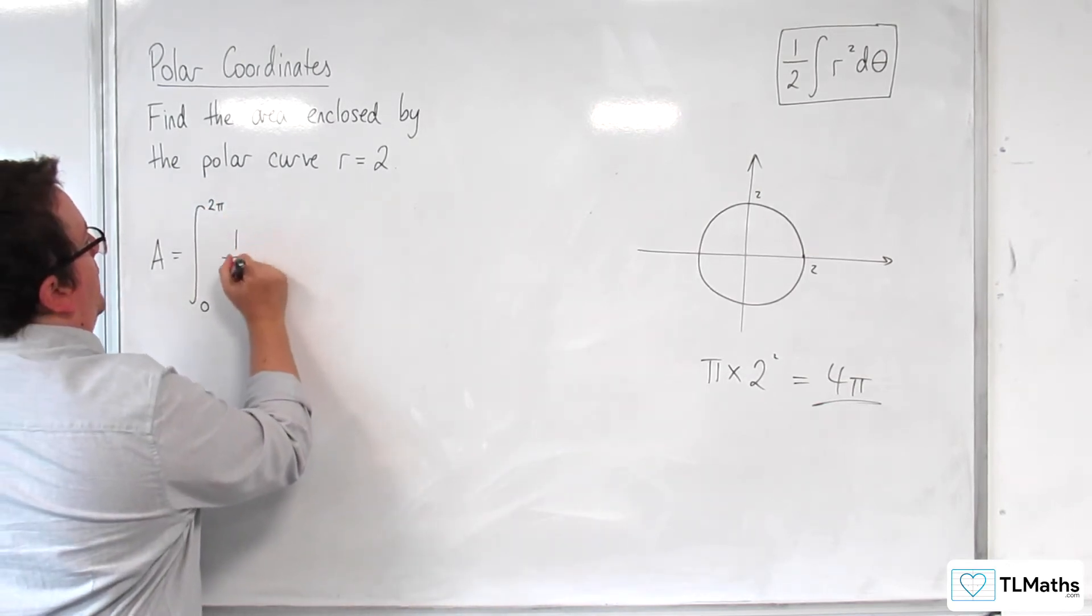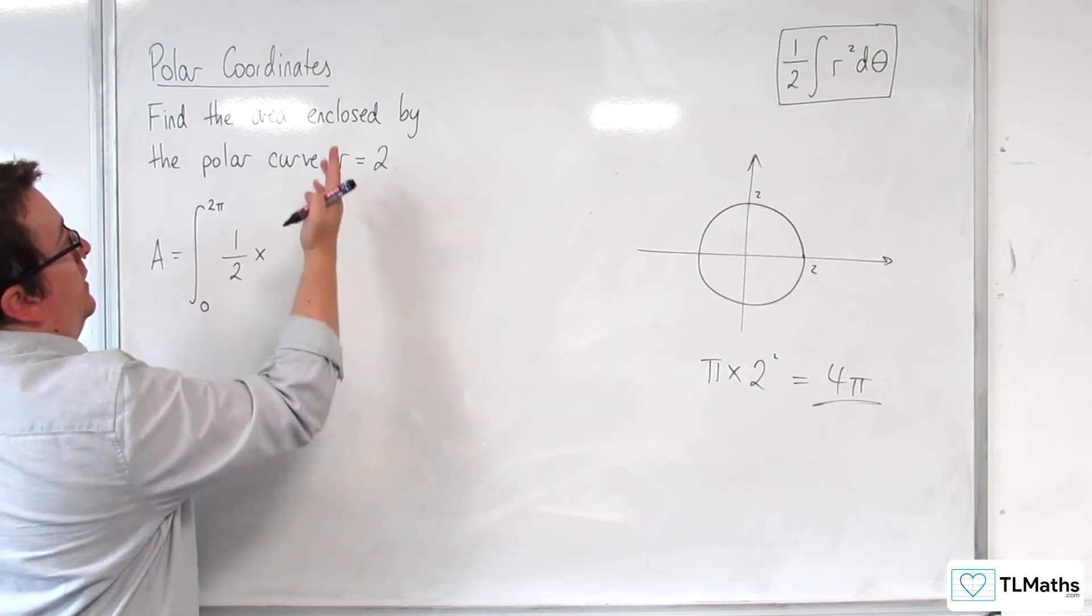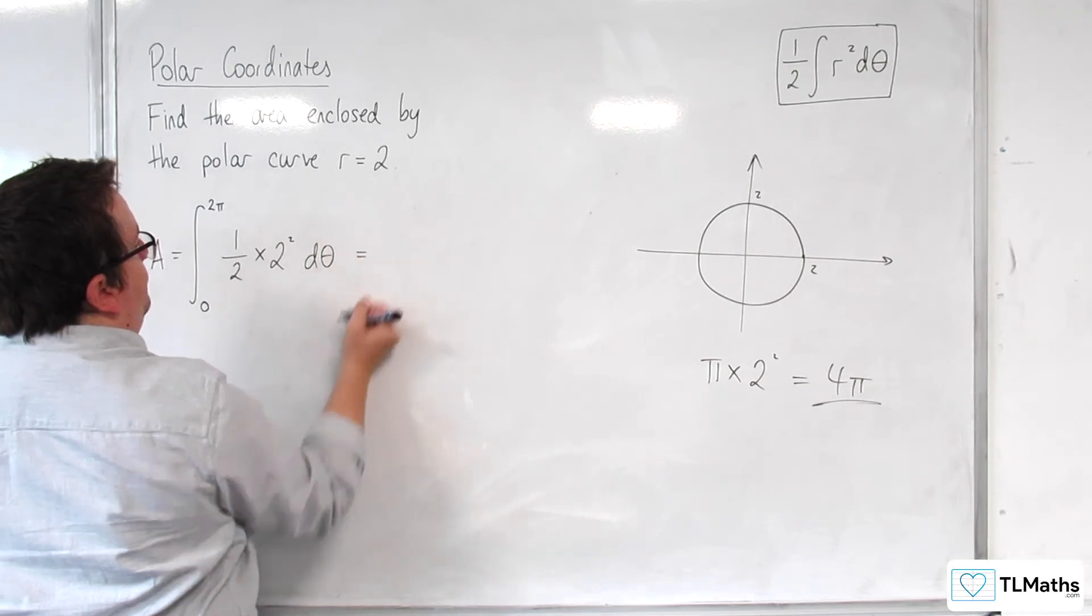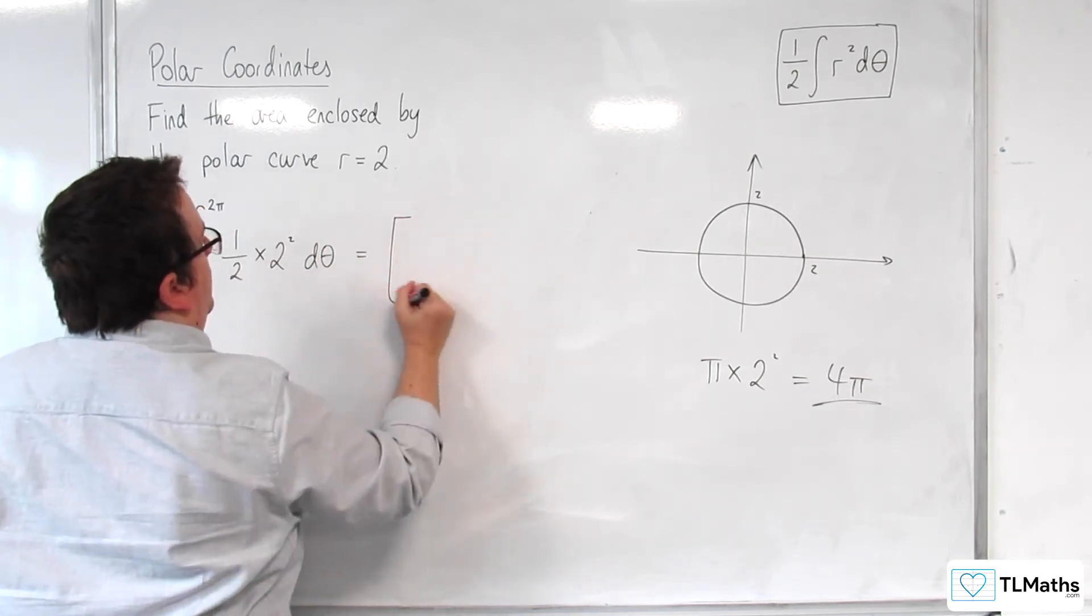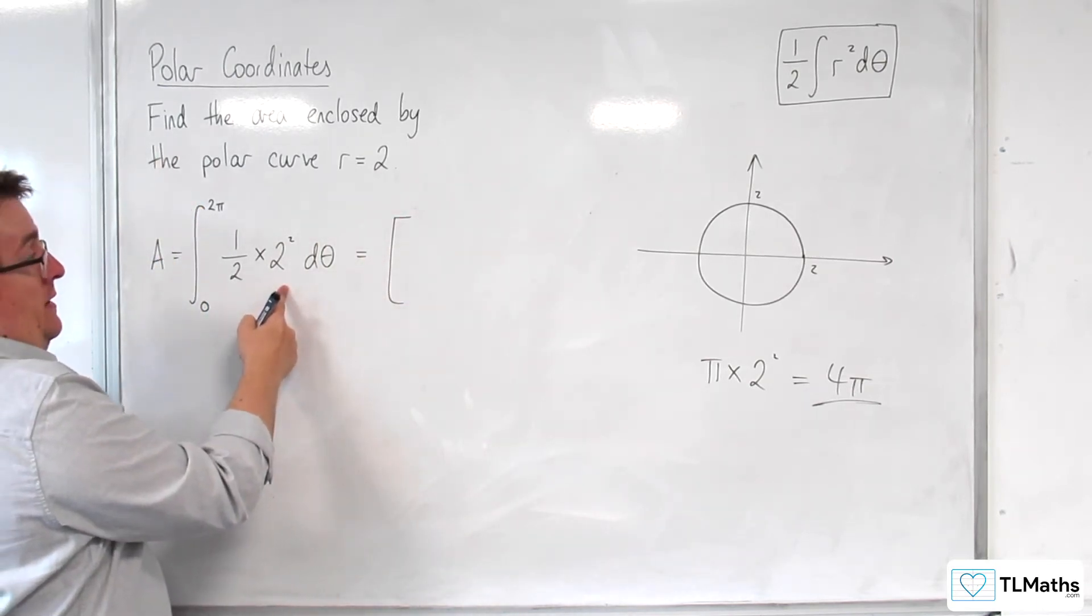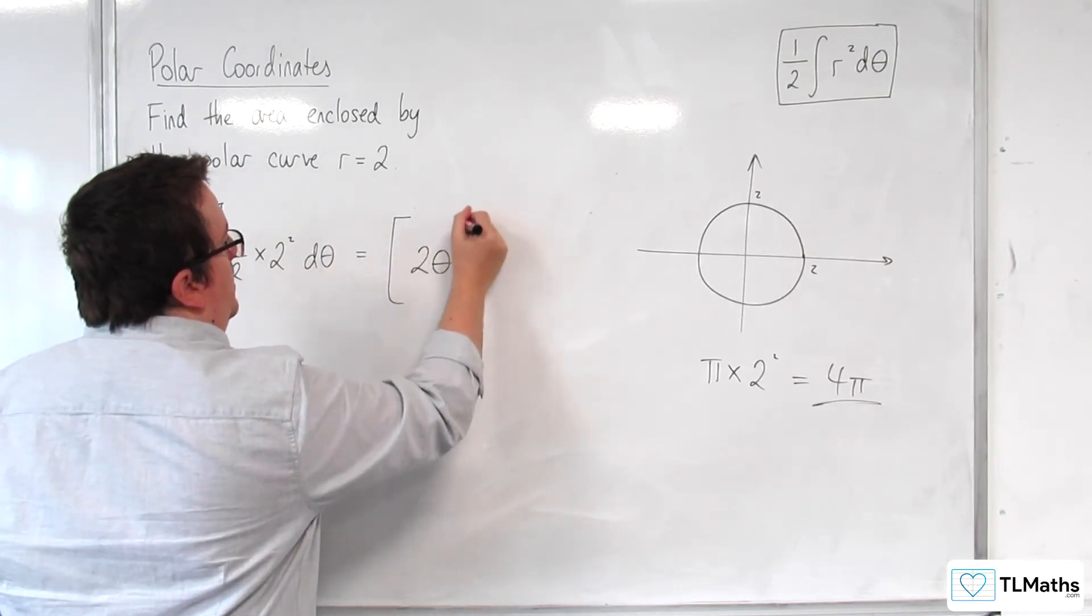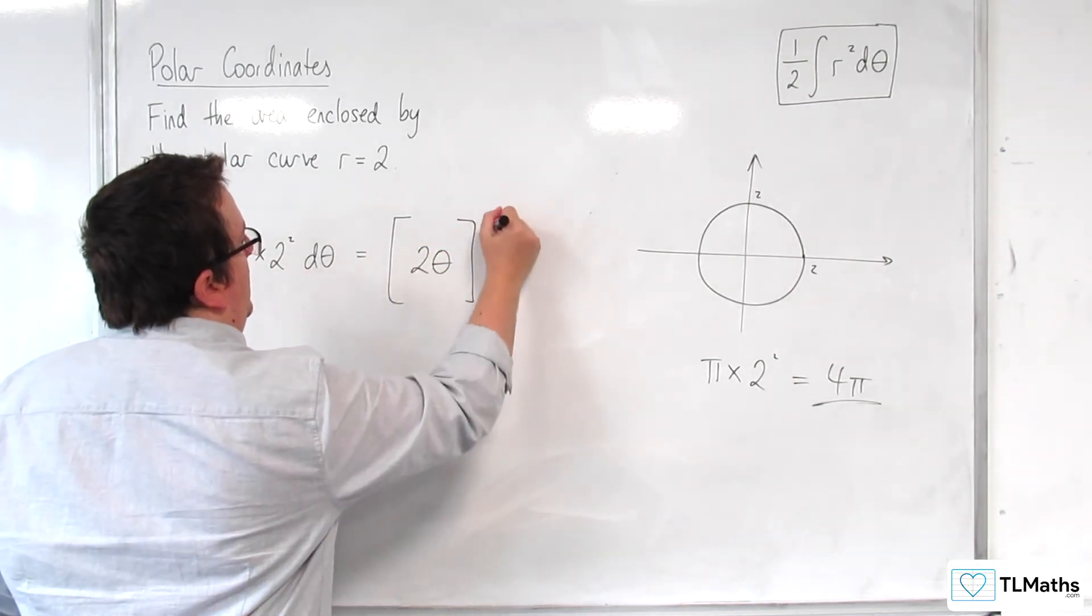And then we've got 1 half times r squared which is 2 squared, d theta. So 1 half times 2 squared is 2, so 2 integrates to 2 theta and we're evaluating that between 0 and 2 pi.